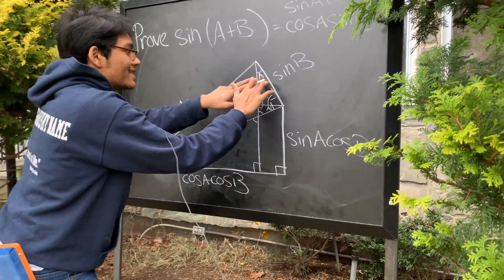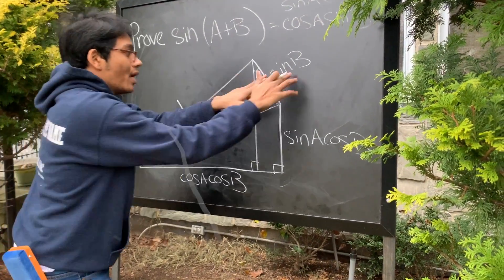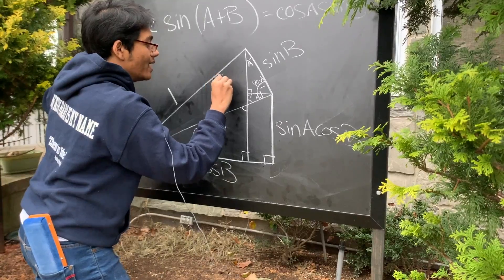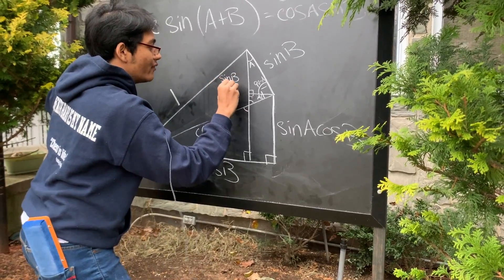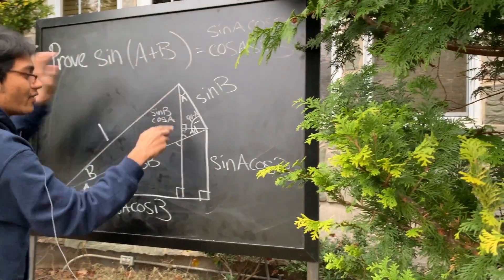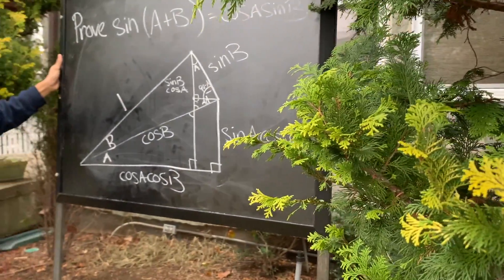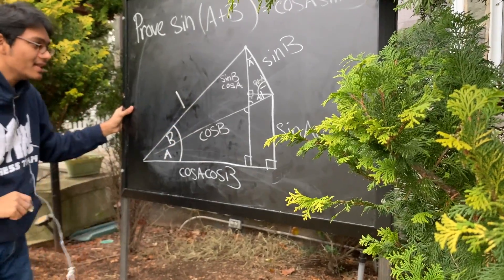So, this is A, this is sine of B, what can we say? Well, we can say that this leg over here has to be sine of B cosine of A. Right? This leg over here must be sine of B cosine of A. And now you can see where I'm getting at. Now we can find what sine of this angle is.